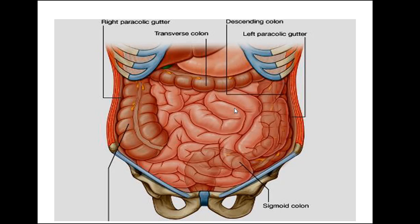Regarding blood supply: the superior mesenteric artery supplies the jejunum and the ileum, as well as the cecum, the ascending colon, and the proximal two-thirds of the transverse colon. So all of the small intestine is supplied by the superior mesenteric artery, except part of the duodenum which is supplied by the celiac trunk, as reviewed earlier.